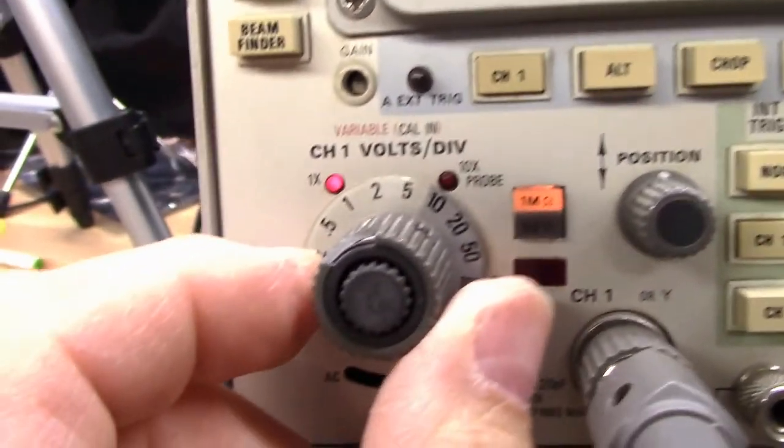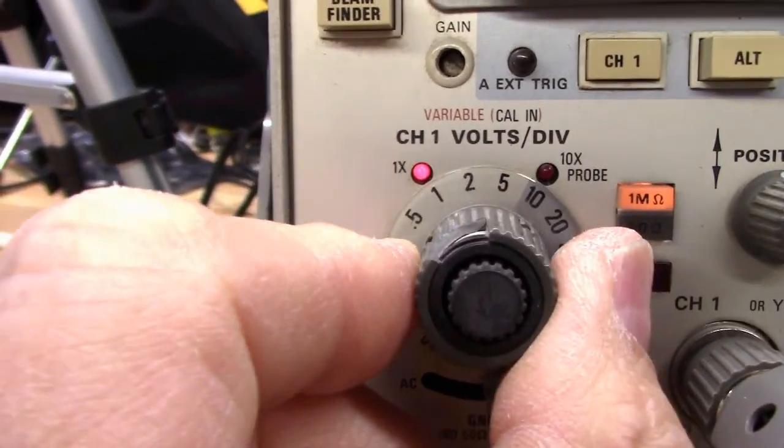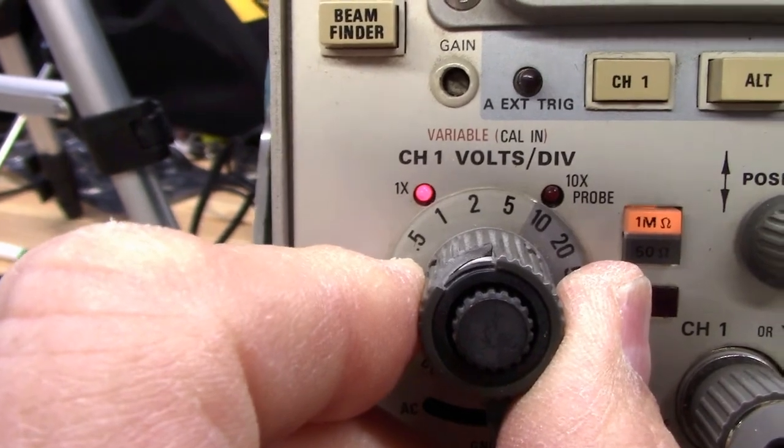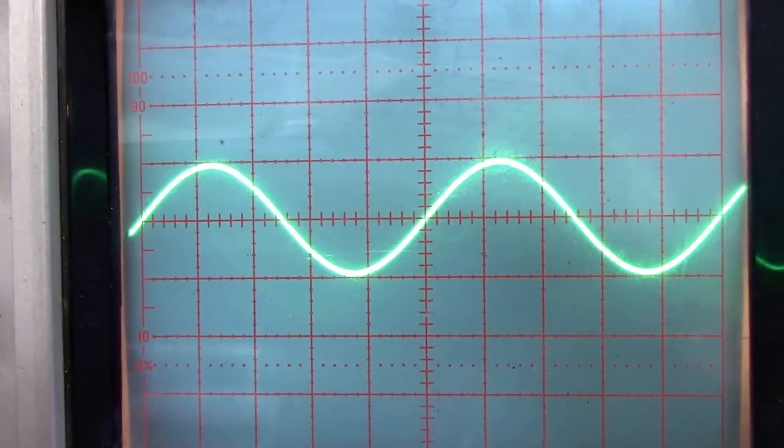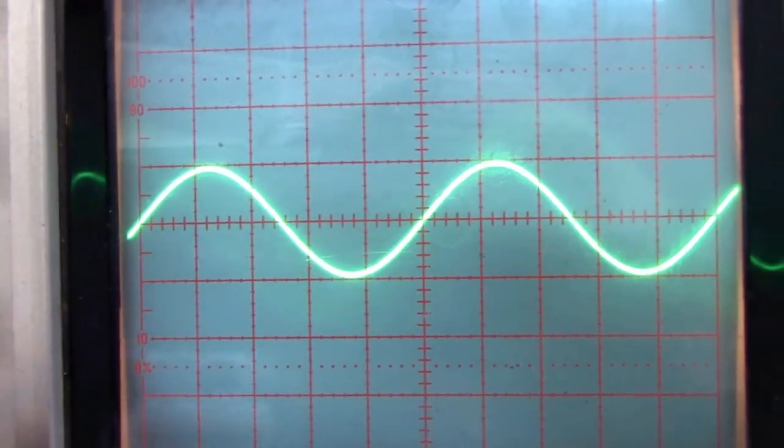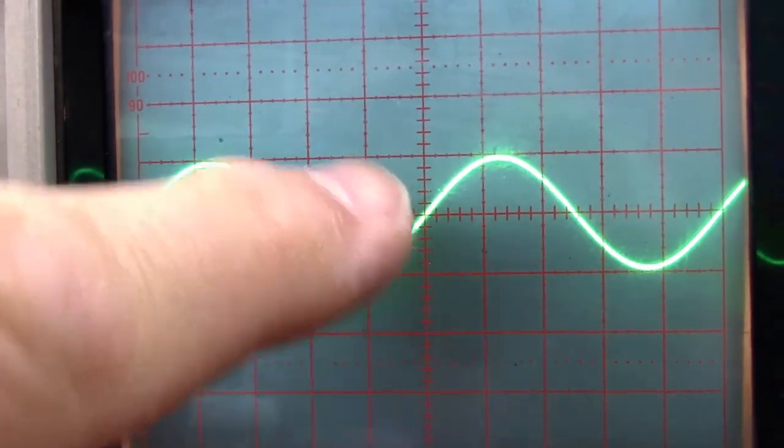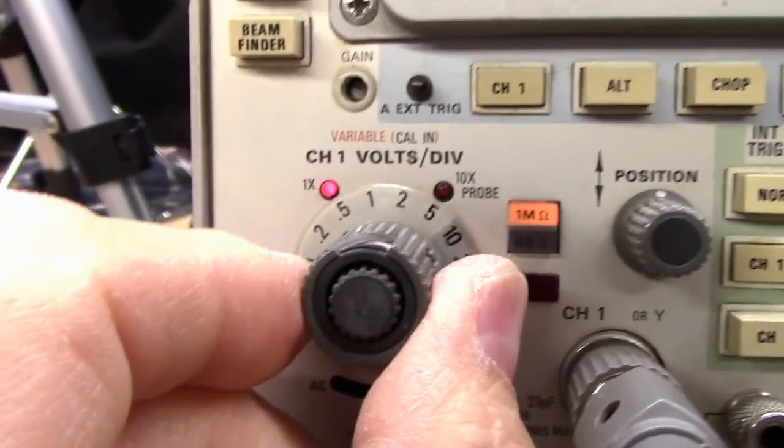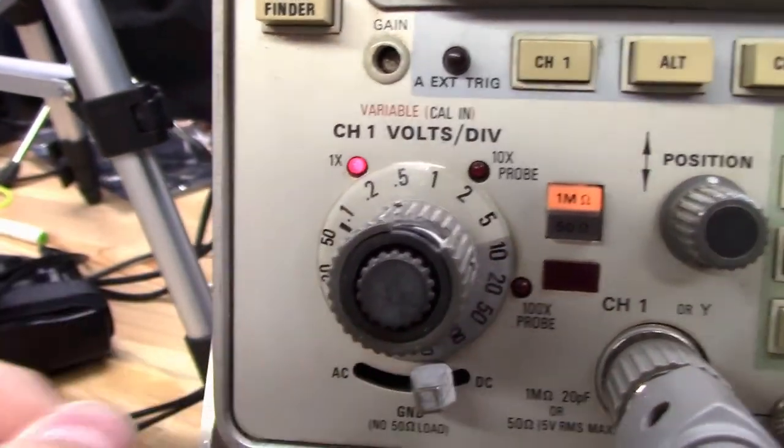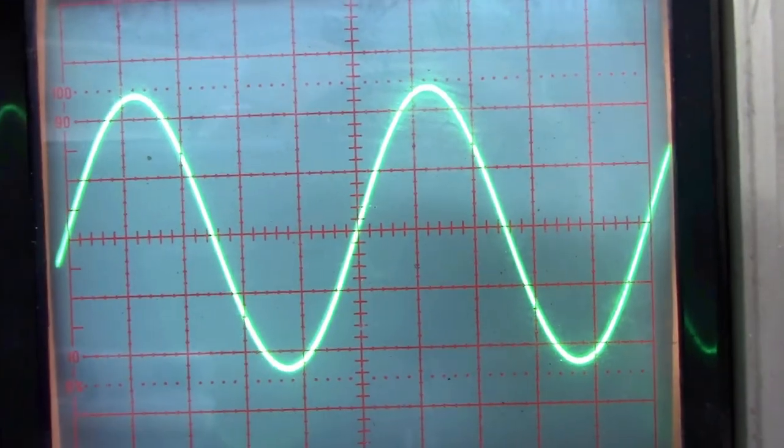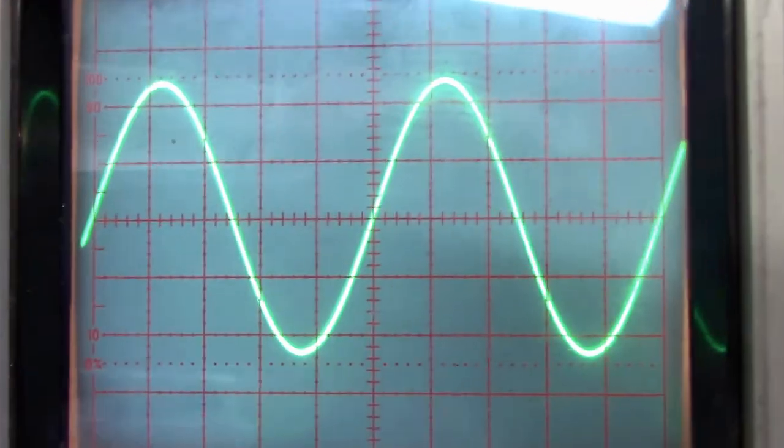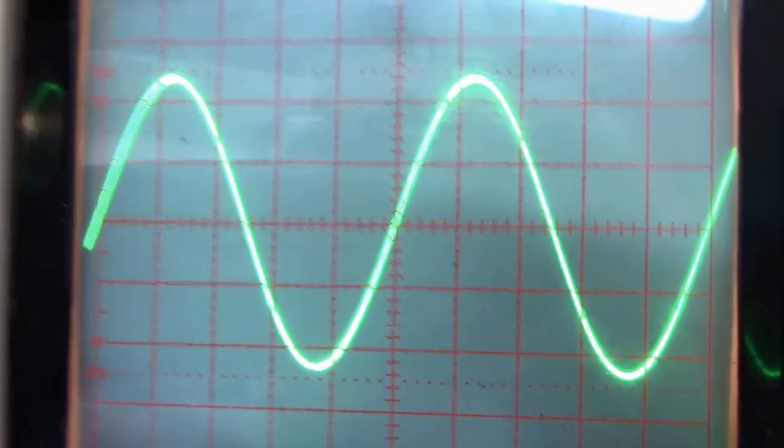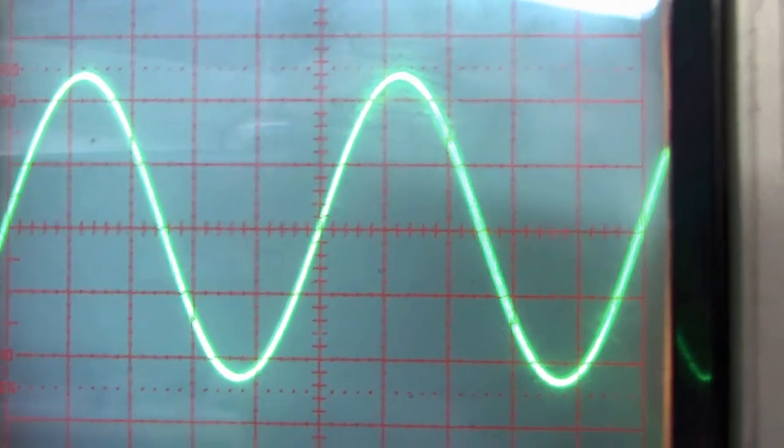So I'm going to decrease the volts per division to 0.5. Now you notice with 0.5 that it's exactly two divisions tall. Well let's make it even bigger. 0.2 volts per division. Now it is five divisions tall. And you say well how do I see that? Well this is where your vertical position comes in handy. Vertical and horizontal.